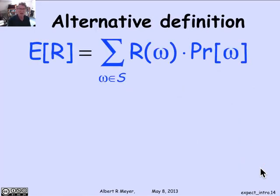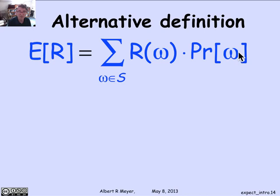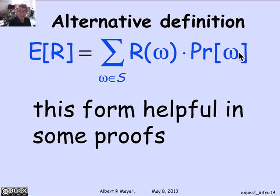There's a technical result useful in some proofs: the expectation can also be expressed as the sum over all possible outcomes in the sample space of the value of the random variable at that outcome times the probability of that outcome. This is an alternative definition compared to summing over all values times the probability of that value. It's not entirely obvious that those two definitions are equivalent, but it's not a bad exercise to prove this equivalence.